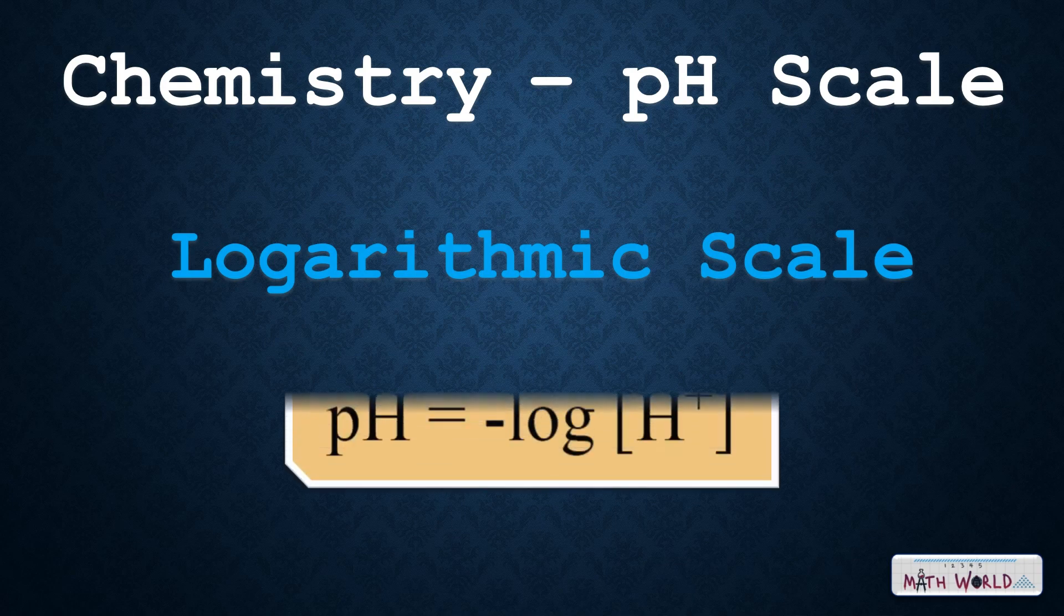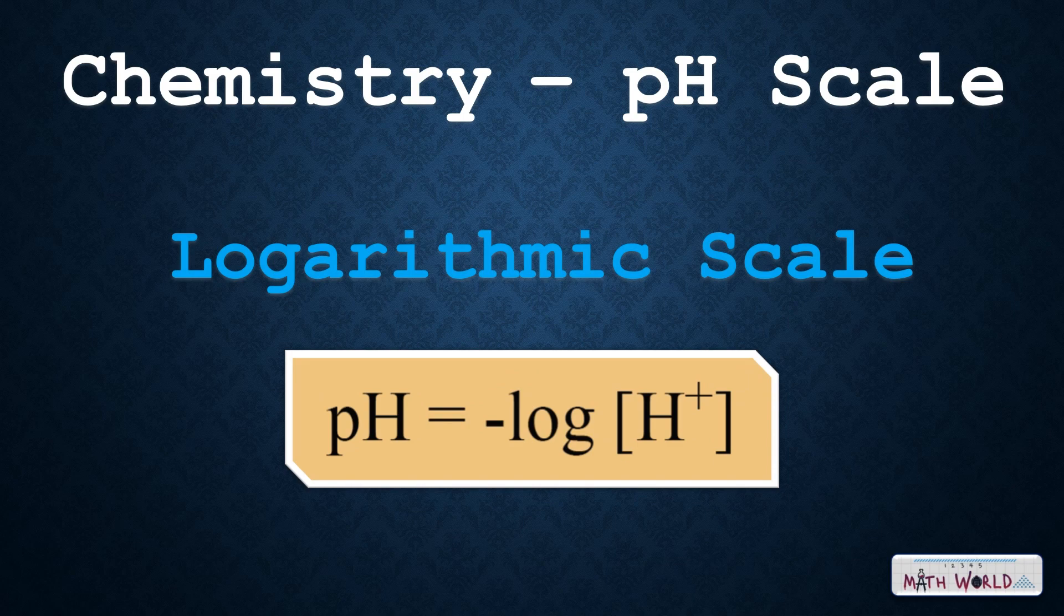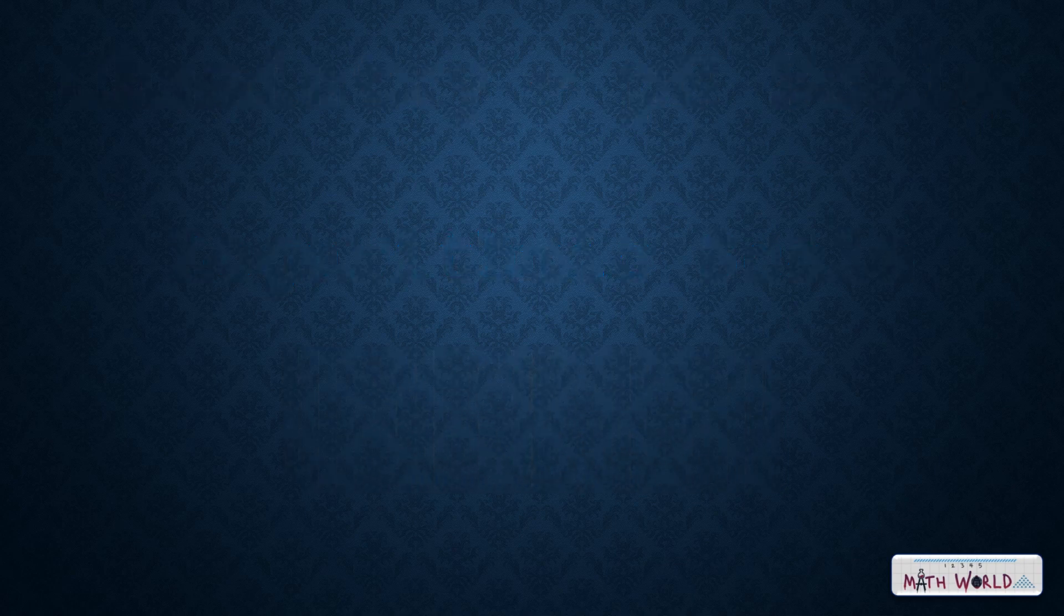The formula for pH is pH equals negative log H+, where H+ is the concentration of hydrogen ions. The negative sign and the logarithm in the formula show that the pH scale is based on the exponent of 10.